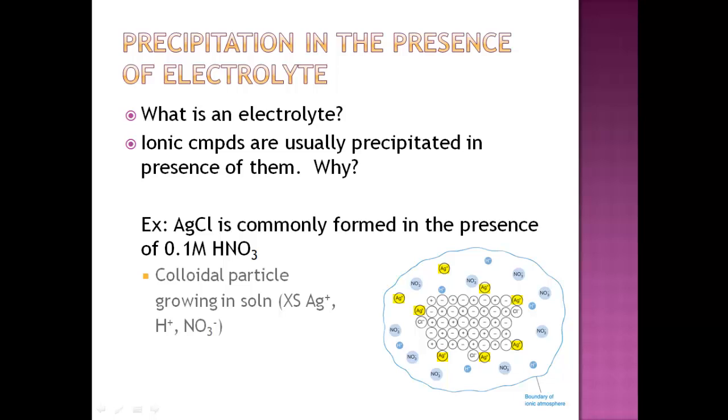So you have this net positive charge because of all these silver ions attaching to it, but the region in the solution outside the particle is called the ionic atmosphere and that has a negative charge because you've got all those silver ions on the outside regions or the border of the particle that's growing. So that's going to attract all of those negative charges around that.